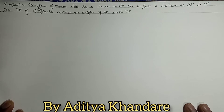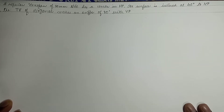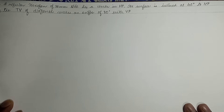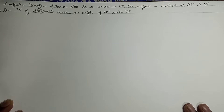Hello dear students. Today we will see another problem of projection of plane with the method of auxiliary plane. A regular hexagon of 30 mm side has a corner in HP. Its surface is inclined at 45 degrees to HP and the top view of the diagonal makes an angle of 30 degrees with VP. The corner is in HP and the surface inclination is 45 degrees to HP.